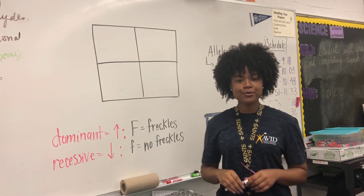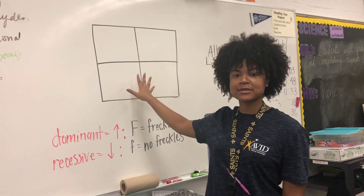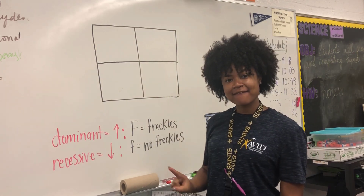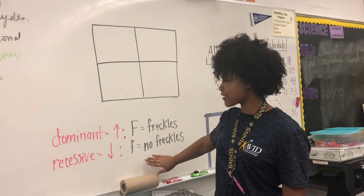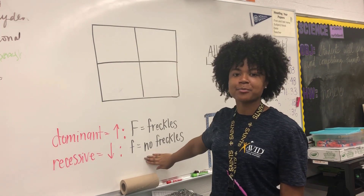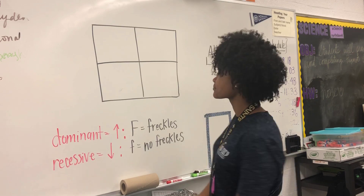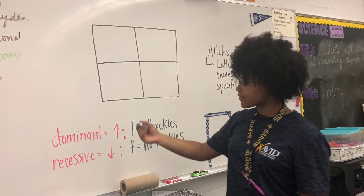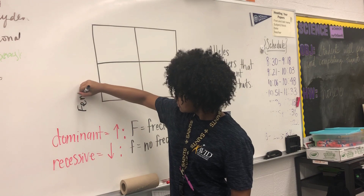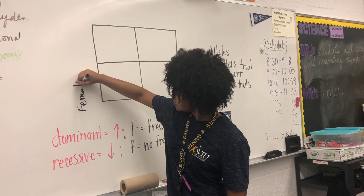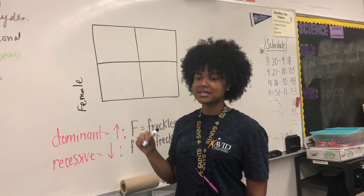In this example, we'll show how a Punnett square box looks if there is a recessive trait that receives a percentage in our probability outcome. Remember, the female alleles go on the side and male alleles go on the top.